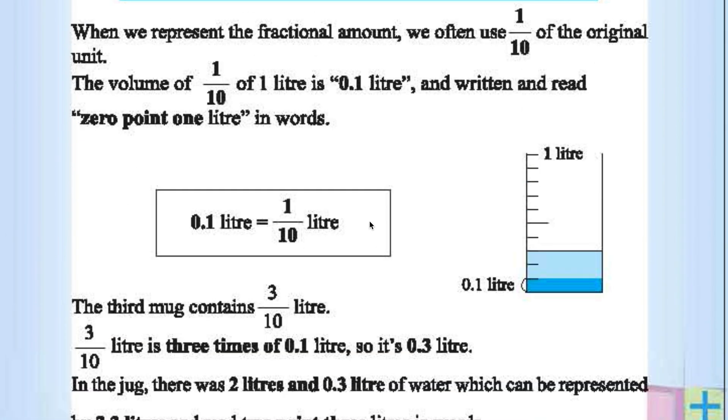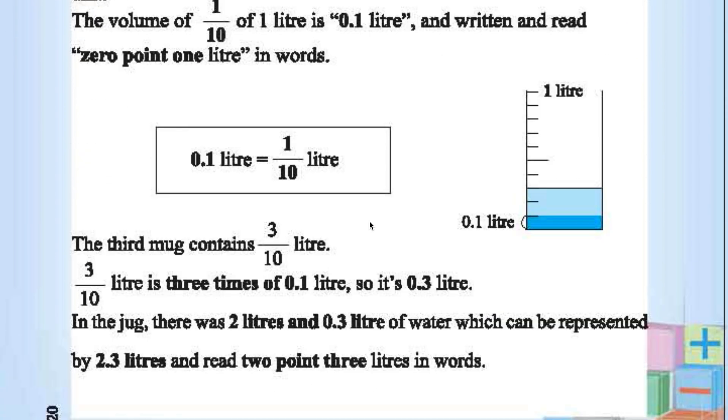So in the jug, there is 2 liter and 0.3 liter. 2 liter plus 0.3 is nothing but 2.3 liters.